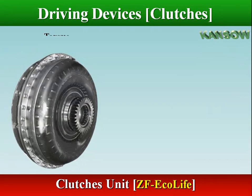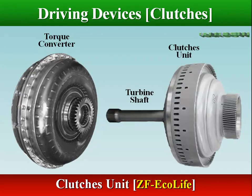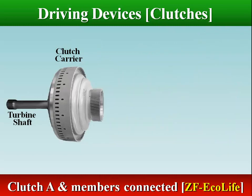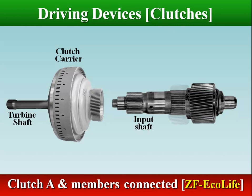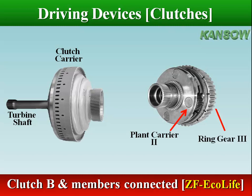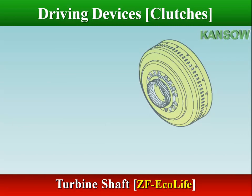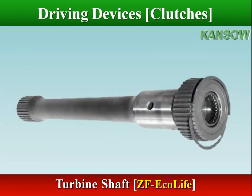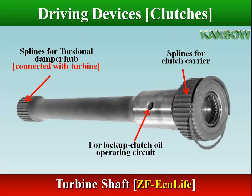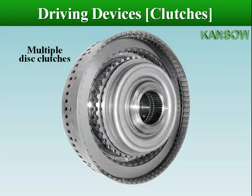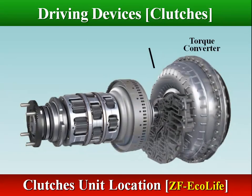The driving devices connect the turbine shaft from the torque converter to a member of the planetary gear train. The turbine shaft is normally built as part of or splined to one or more of the driving devices. Driving devices are usually multiple plate disc clutches, and in most cases will be at the front of the transmission, just behind the pump.